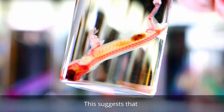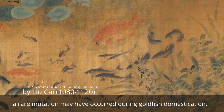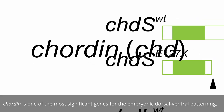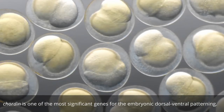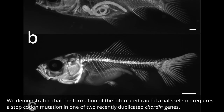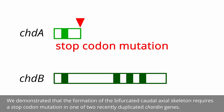This suggests that a rare mutation may have occurred during goldfish domestication. In 2014, we reported that the bifurcated caudal skeleton arises from a mutation in the caudin gene. Caudin is one of the most significant genes for embryonic dorsal-ventral patterning. We demonstrated that the formation of the bifurcated caudal axial skeleton requires a stop caudin mutation in one of two recently duplicated caudin genes.